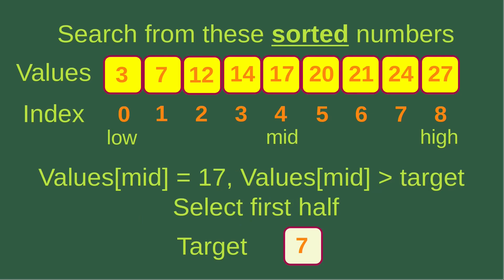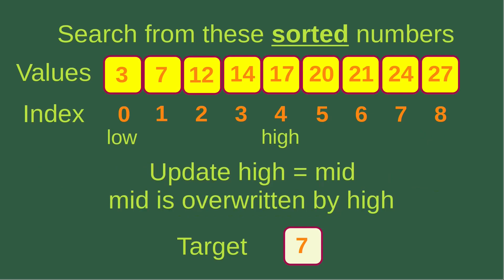The mid-index corresponds to 17, which is larger than the target of seven. That means I have to select the first half of the array and continue the iteration there. I update the high index to become the mid-index, so low is still zero and high is now four rather than eight.